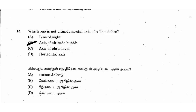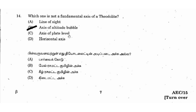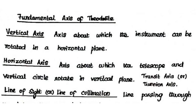Next question: which one is NOT a fundamental axis of the theodolite? The options include line of sight, axis of altitude bubble, axis of plate level, and horizontal axis — all of which ARE fundamental axes of the theodolite.